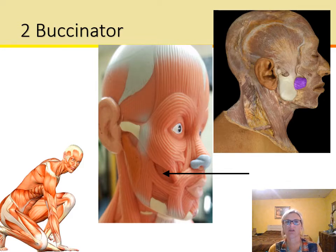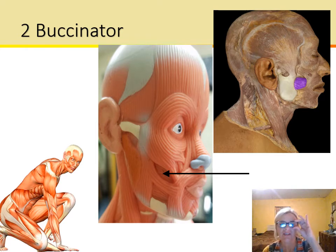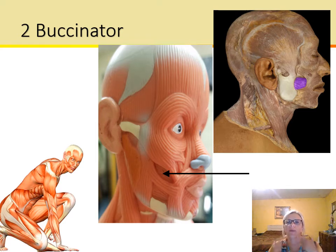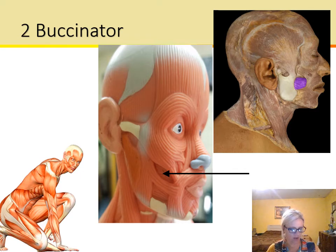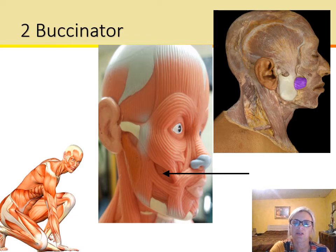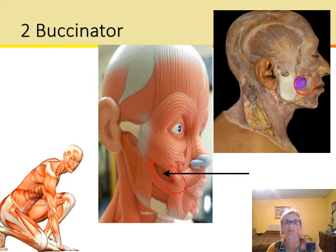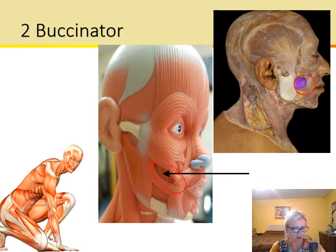The buccinator — sometimes pronounced 'buccinator' — is also known as the trumpeter muscle. It pulls the corners of your mouth laterally and presses the cheek against the teeth. This is what you would need to do to blow into an instrument like a trumpet. You can see it here on the model, and then very clearly in APR. Be sure you learn these on both APR and on the models — that is important.